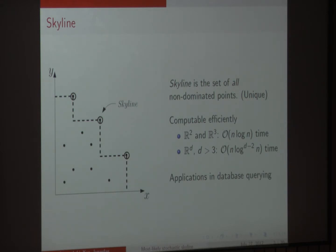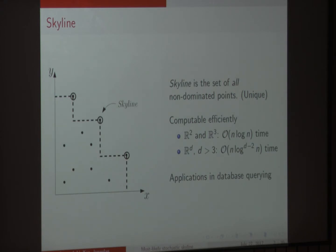It is very straightforward. For example, if you think of each point as representing a hotel with some attributes, then a user might be interested in finding the most interesting hotels to explore further. The ones that are below the skyline are not of interest because they are dominated by the points on the skyline. So this is a classical well-studied problem.